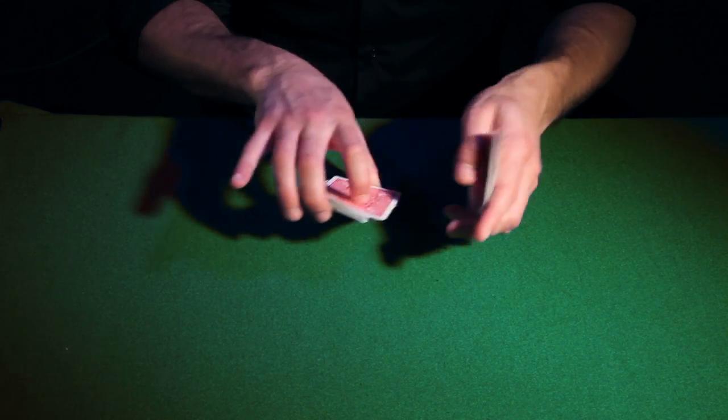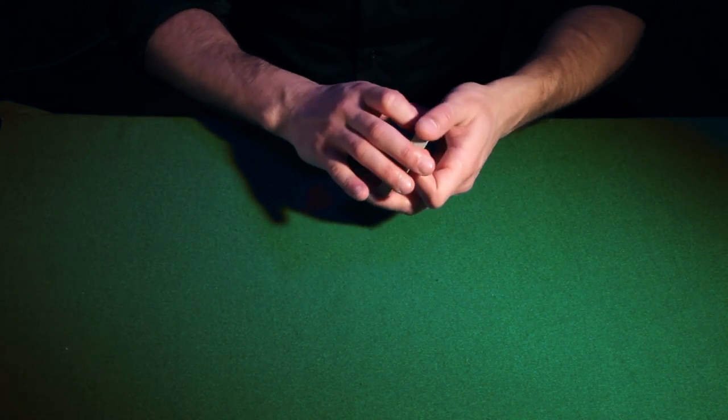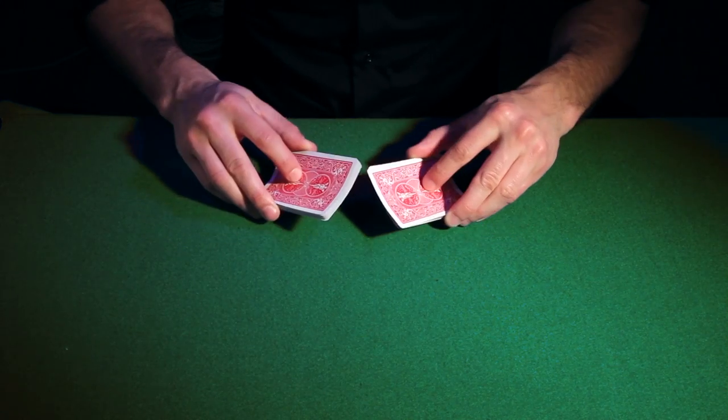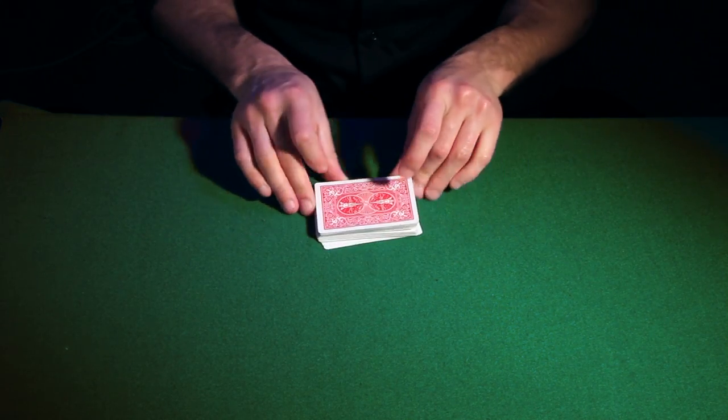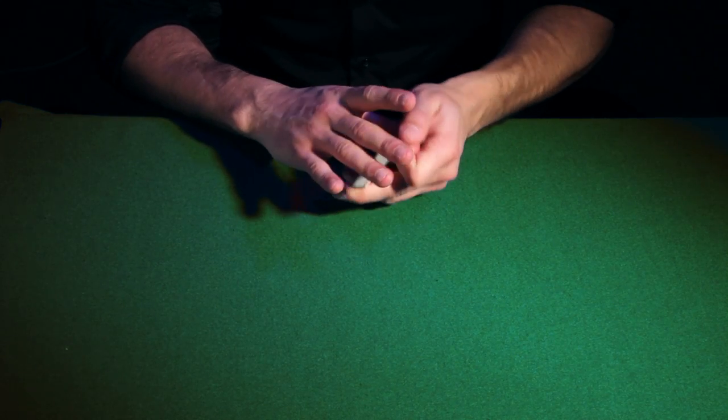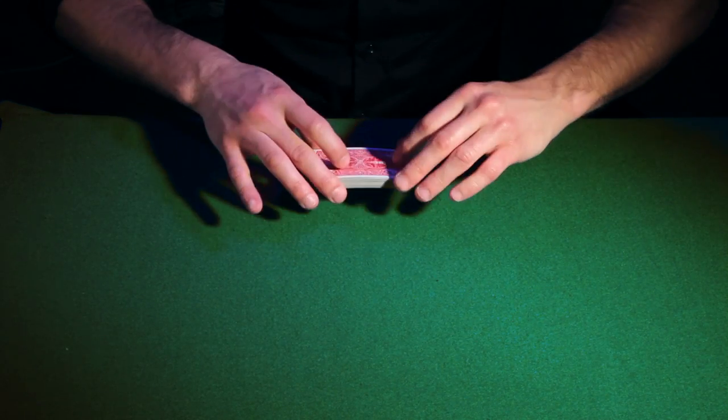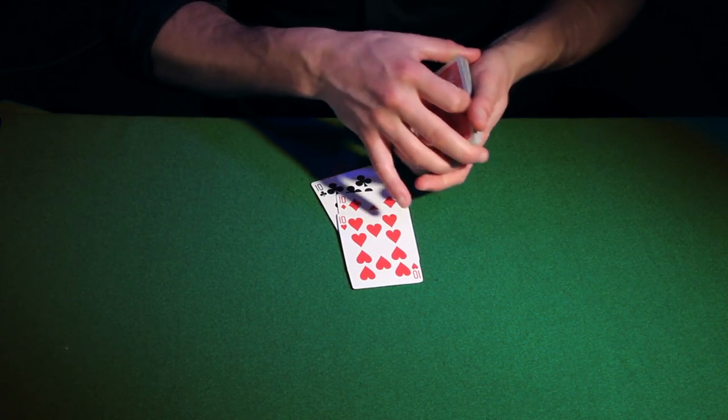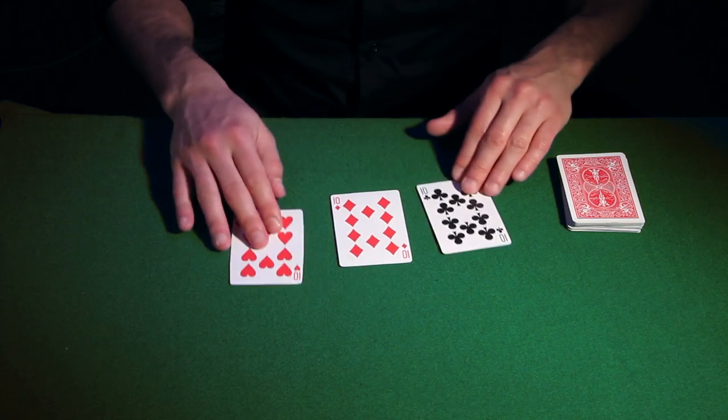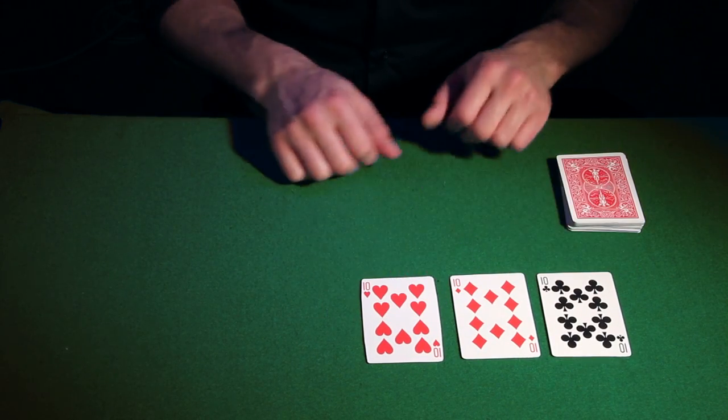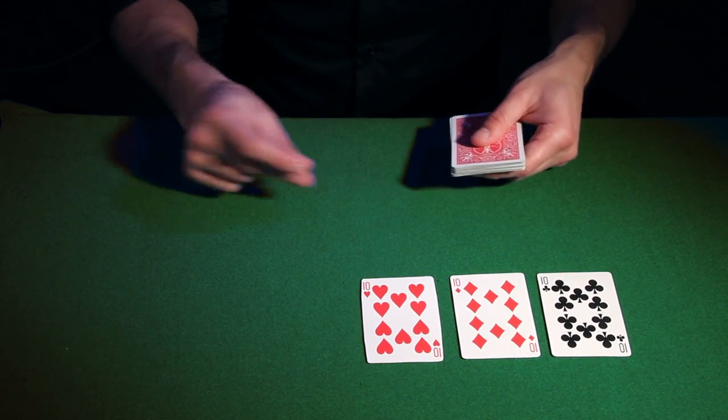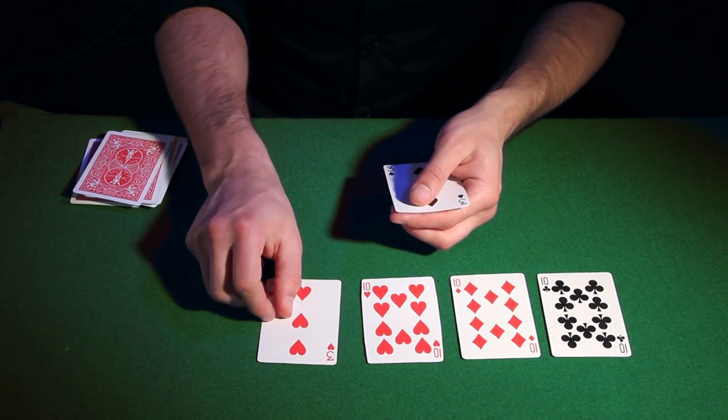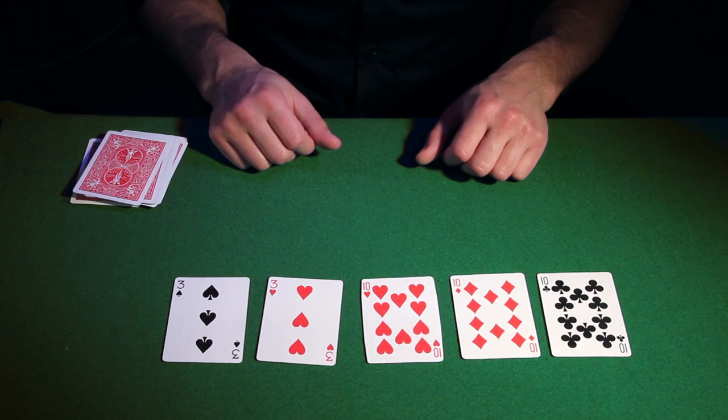One of my favorites now. The full house, which is a three of a kind combined with a pair. Let's start with the three of a kind. I'll use the tens. Let's line them up on the table. Plus a pair of threes, for example. One of my favorites.